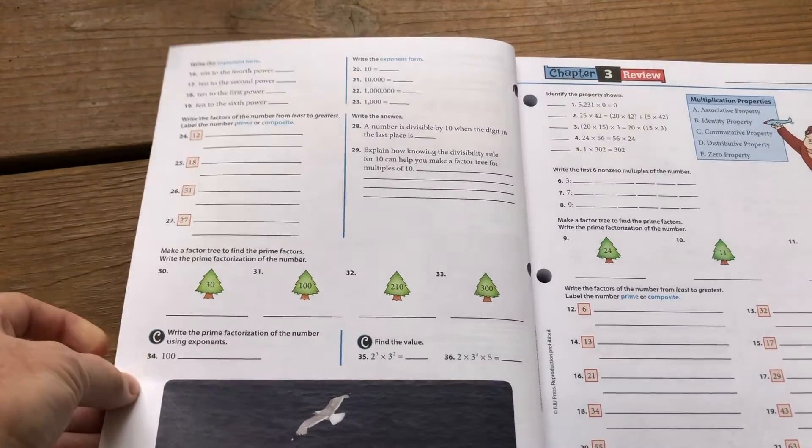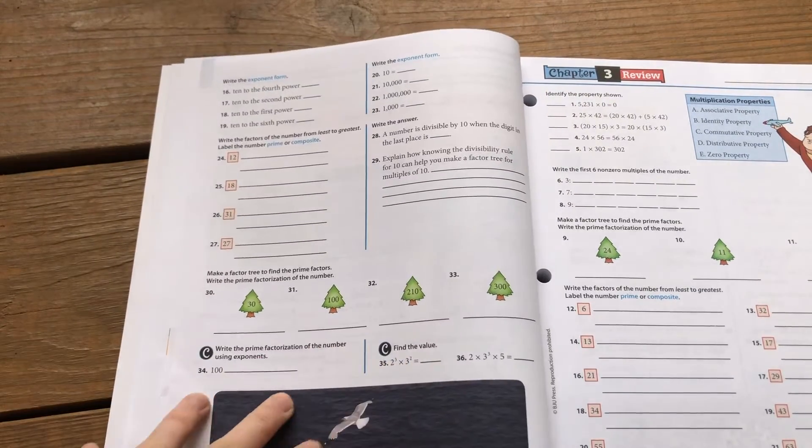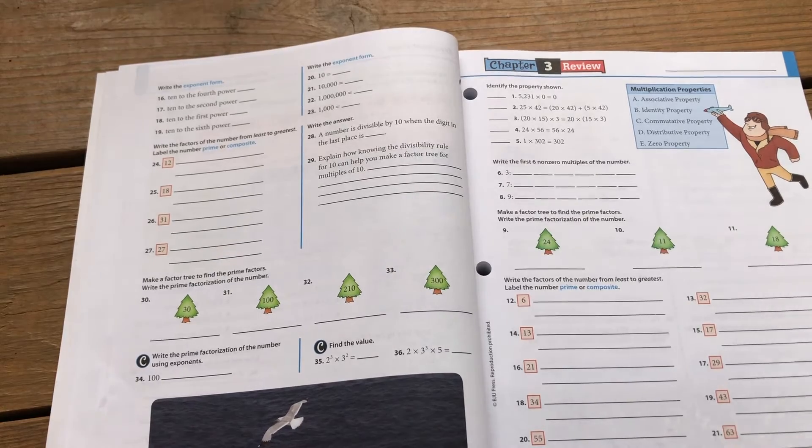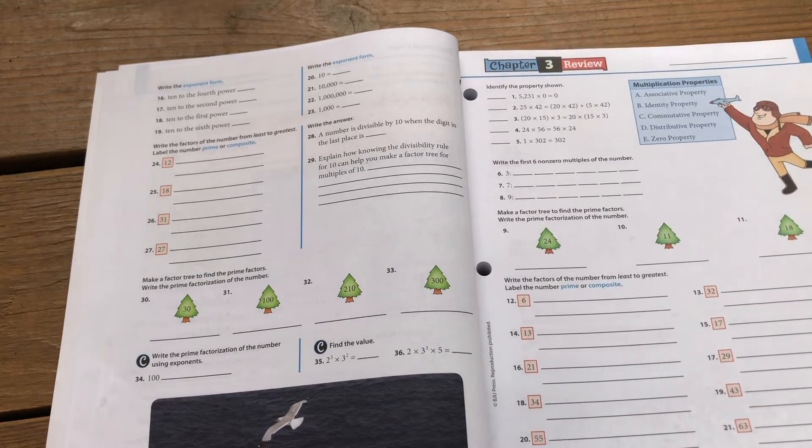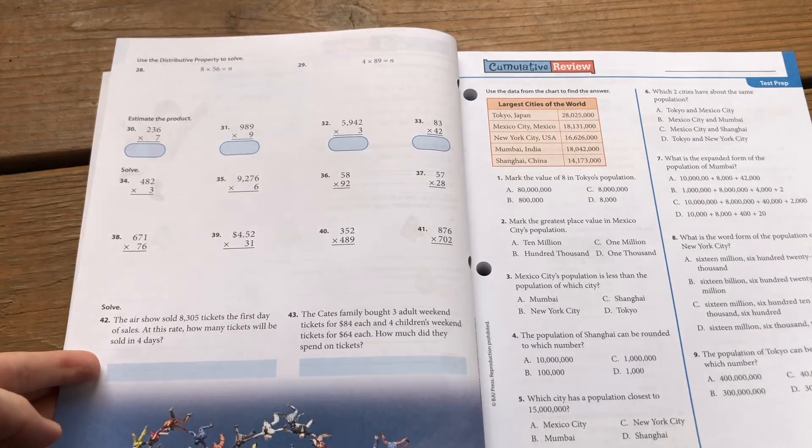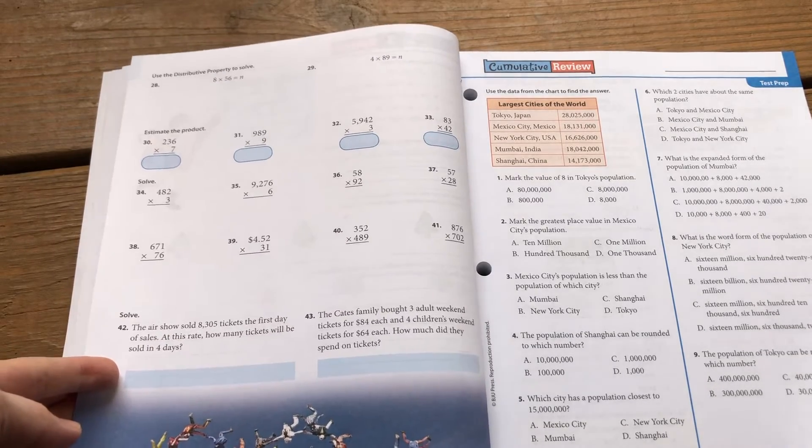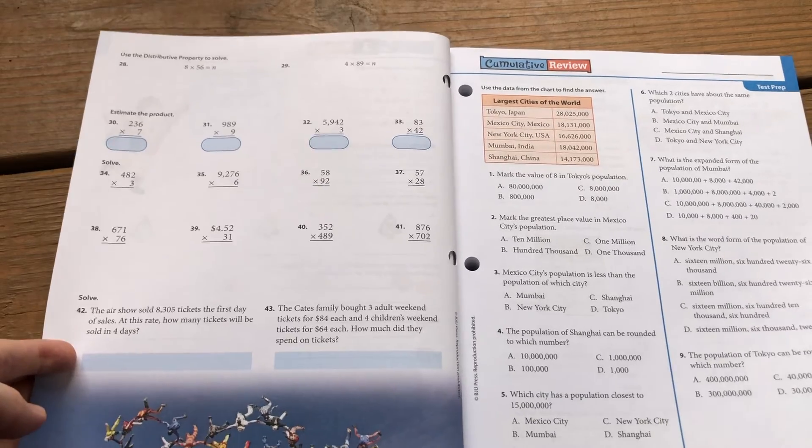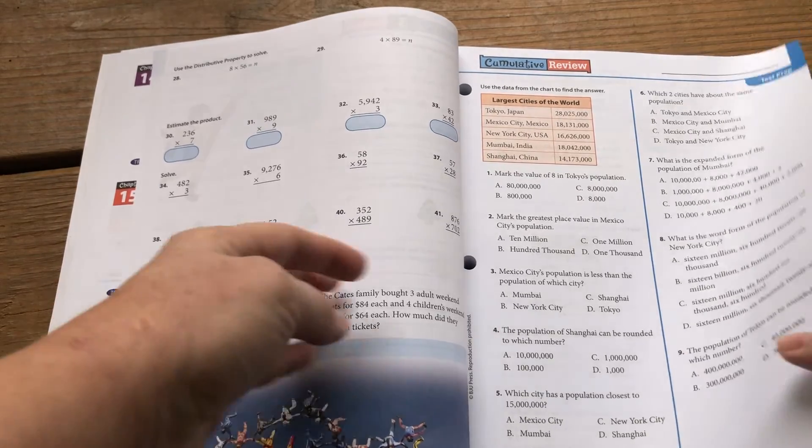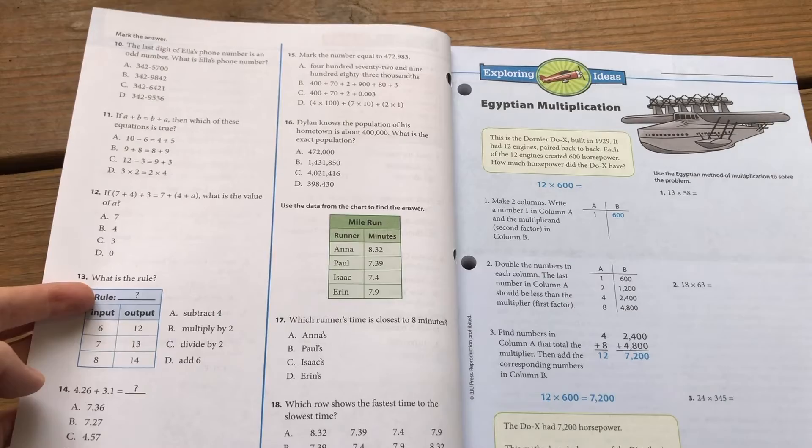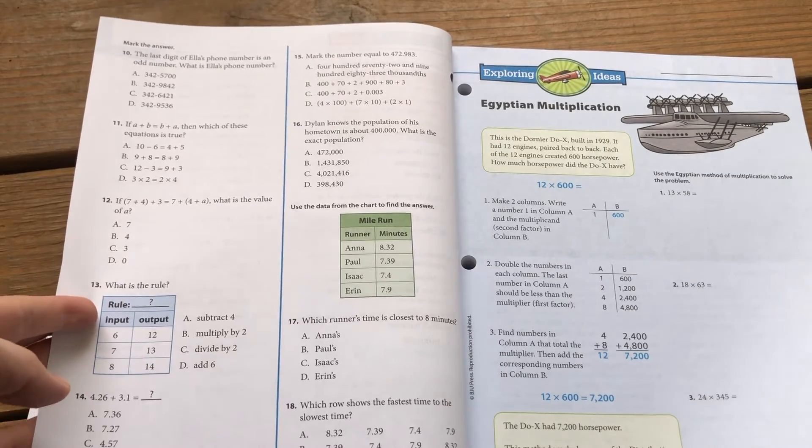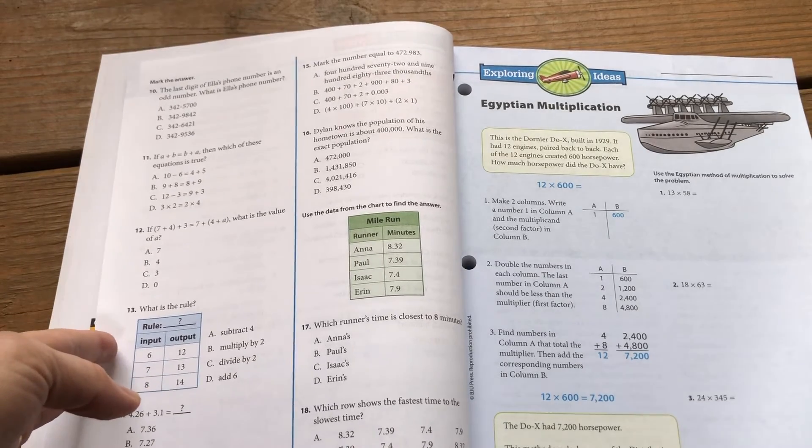So you can see it's not too much, it's just the right amount. And then of course after every chapter there's a nice review so you can make sure your child understands. We don't do tests in fifth grade. You could buy tests for this but we don't bother. Just use the chapter review and the cumulative review to make sure my child knows the concepts. And then there's extra little bits in here. You can see that page Egyptian multiplication, we honestly just skipped them.